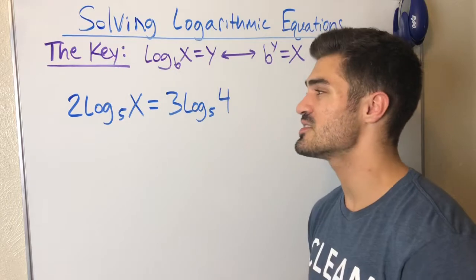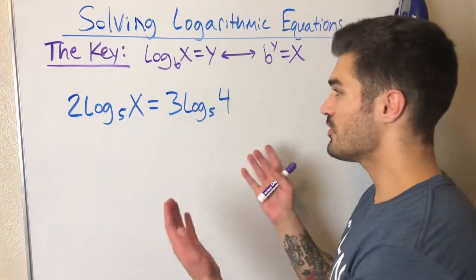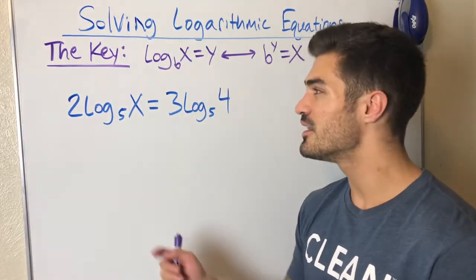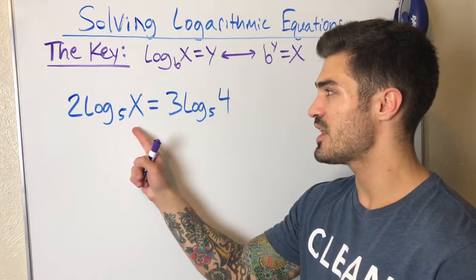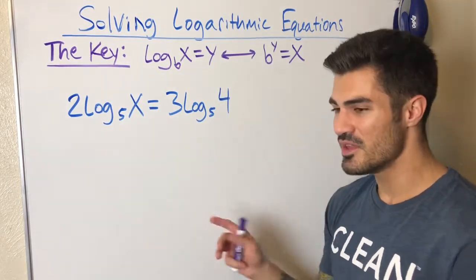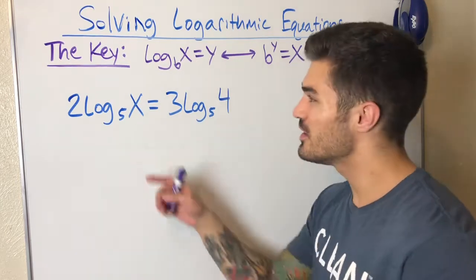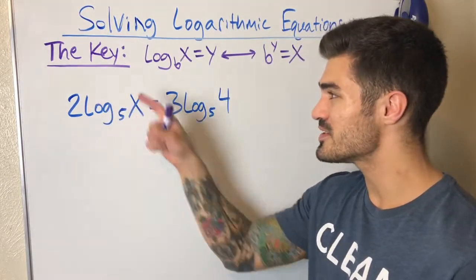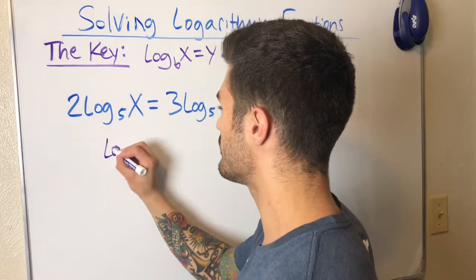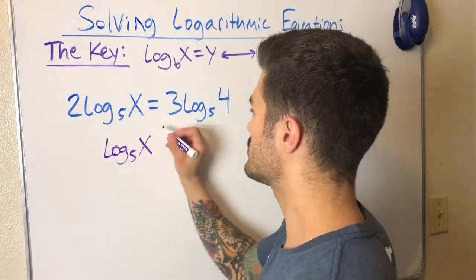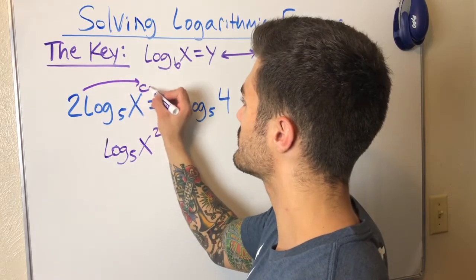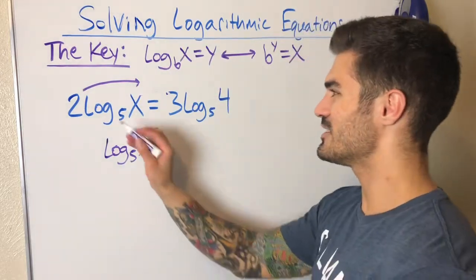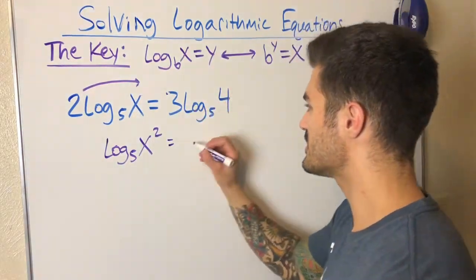This next example looks like a situation where I can use that same trick — we have the same base on each side — but there are constants out front being multiplied. The 2 times log base five of x and the 3 times log base five of 4 are causing problems. I need to use logarithm properties to bring these coefficients up into the exponent. So 2·log₅(x) becomes log₅(x²).